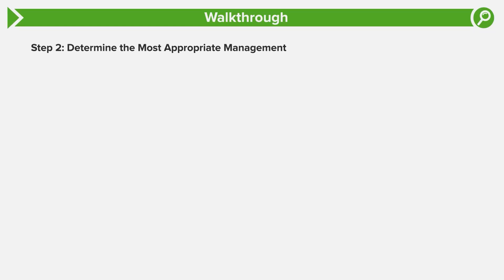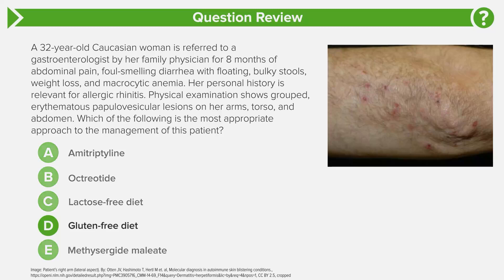The next step is how to treat celiac disease. Of the answer choices, a gluten-free diet — answer choice D — is the clear answer, because people with celiac disease have a gluten allergy. Celiac disease is an autoimmune condition caused by a hypersensitivity to gluten, a protein commonly found in wheat, barley, and rye. Clinical manifestations include foul-smelling diarrhea, steatorrhea, malabsorption leading to both water- and fat-soluble vitamin deficiencies, as well as skin manifestations — dermatitis herpetiformis — caused by IgA deposition in the skin. Very important to memorize that.